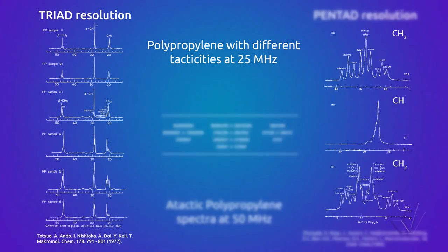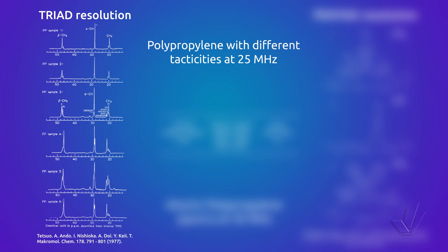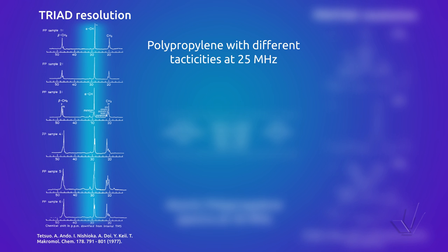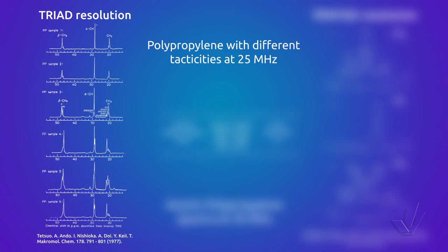We can see in this figure six spectra of polypropylene with different tacticities taken at 25 MHz for the carbon, that is, in a 100 MHz equipment. The polypropylene unit has three types of carbon: the CH₂ that appears around 46 ppm, the CH at 28 ppm, and the methyl group around 20 ppm. Each signal shows a splitting of lines, especially the methylene and the methyl carbons, due to the different configurations or tacticity. The methyl group shows the best resolution in the splitting.